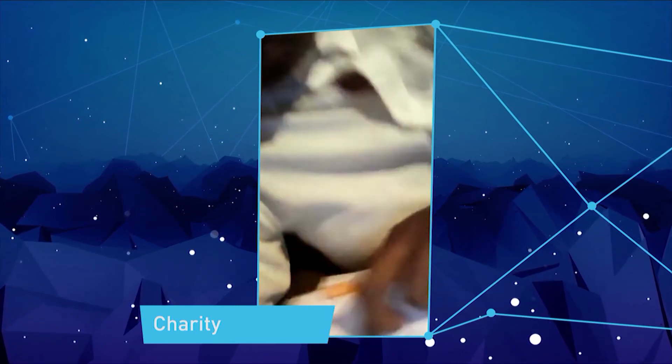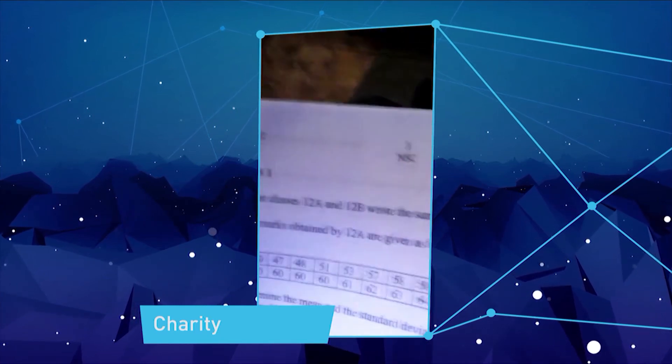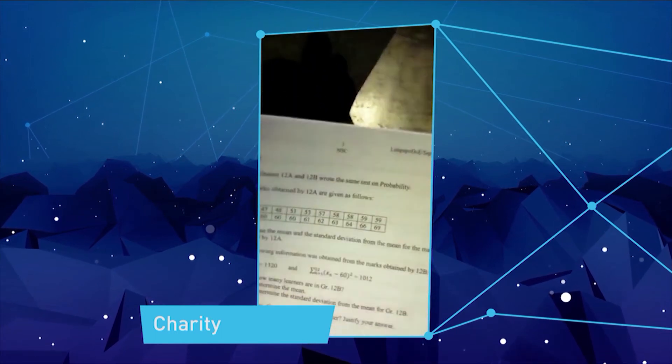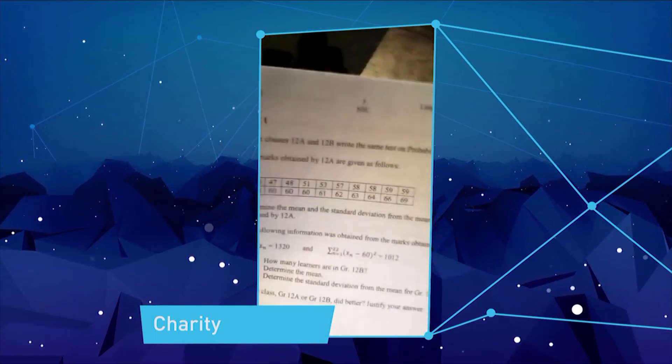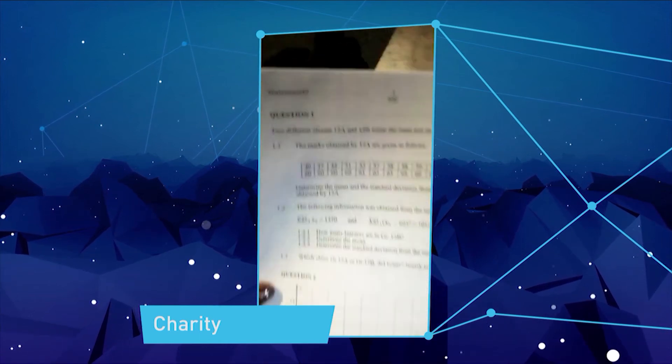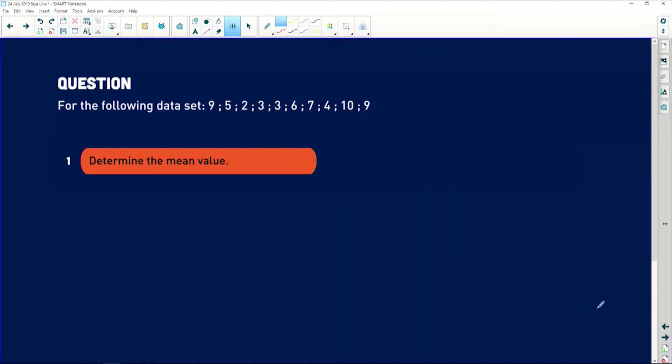This is a simple question where they're just testing your ability to read off the grid. Here is another correlation question. It says, use your calculator to determine the correlation coefficient. For the following data set: 9, 5, 2, 3, 3, 6, 7, 4, 10, and 9.